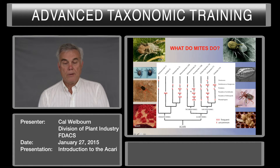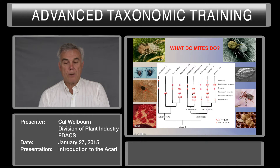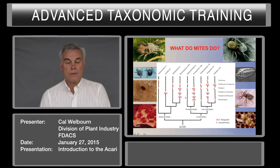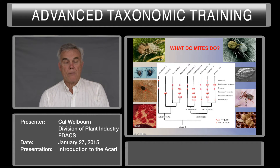In the Prostigmata group, which we'll be talking about most during this workshop, most of them are predators, parasites of vertebrates, parasites of arthropods, and this is where most of our phytophagous mites are. Most of the predator mites in the Mesostigmata are found on plants, especially in the Phytoseiidae.